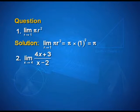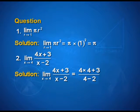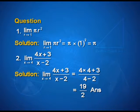For question number 2, limit (4x + 3) upon (x - 2) as x tends to 4 can be simplified as 4 into 4 plus 3 upon 4 minus 2, that is 19 upon 2.